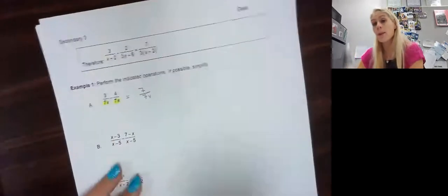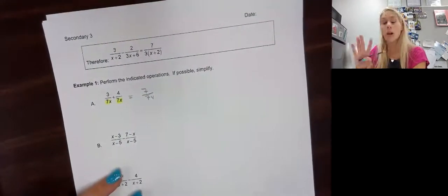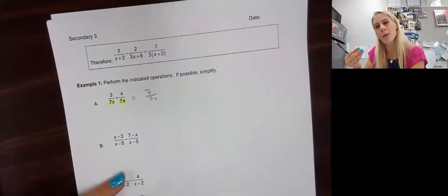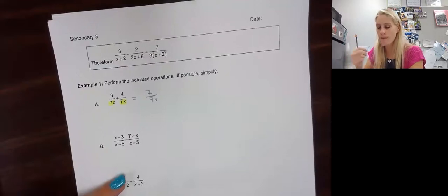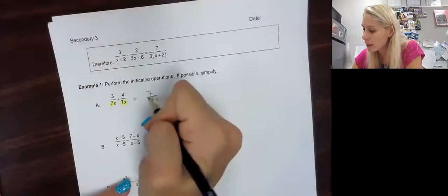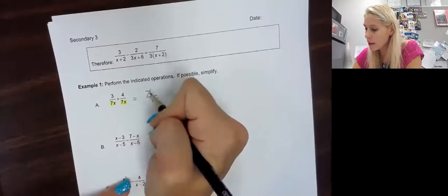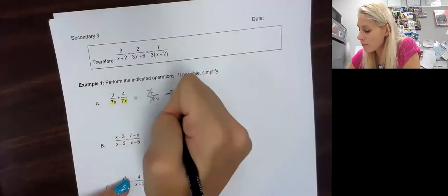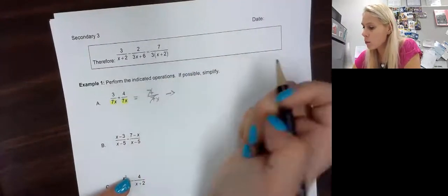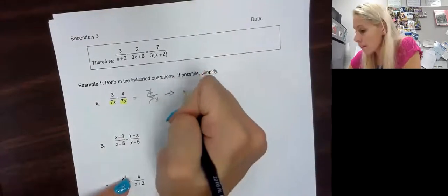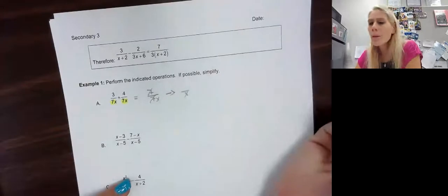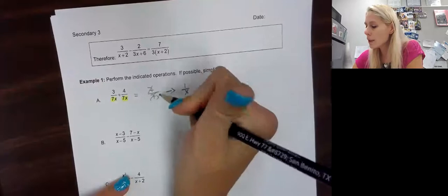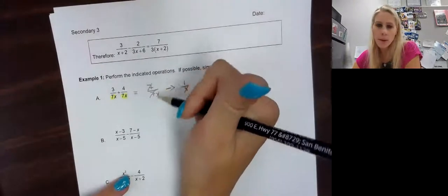The difference between this question and the one before is that at the very end, do you see what we can do? We can actually reduce further. What does the top and bottom have in common? They have a 7. So 7 divided by 7 is 1. One mistake people make: where's that x? That x is on the bottom, so it stays on the bottom. We put 1 on top — not 0. So our final answer is 1 over x.